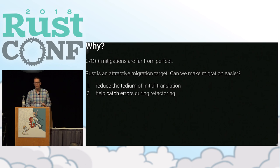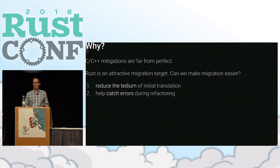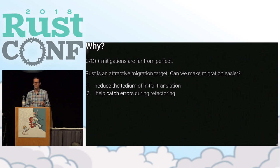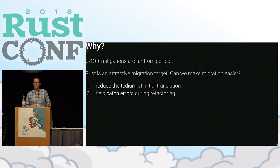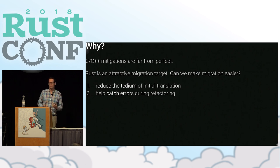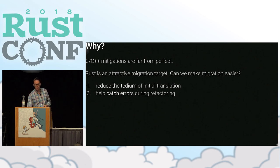Rust is an attractive migration target. I'm sure I won't have to sell you on Rust, but it does have the interesting property of providing not just type and memory safety, but also freedom from data races — that's like catnip to people that have written a lot of C and C++. So we thought, okay, Rust is great, but it's obviously not easy to get into Rust. Is there anything we can do to lower the barrier to entry if you have a C code base that you depend on and must use? We're going to talk about two things: reducing the tedium of getting into Rust syntax, and helping you catch errors during refactoring into more idiomatic Rust.